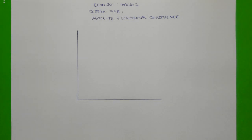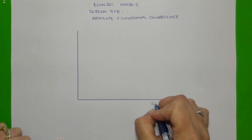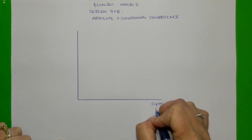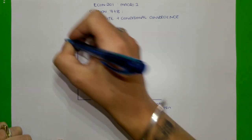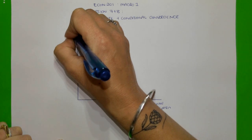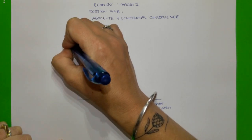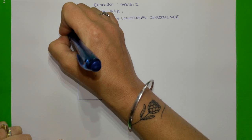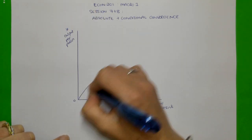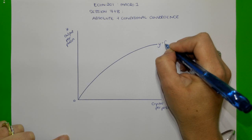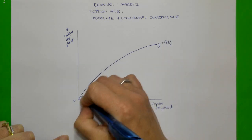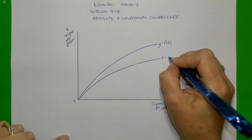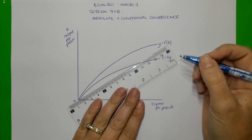We're going to use neoclassical growth theory to understand absolute and conditional convergence. I'm going to label my axes: capital per person (little k) on the horizontal axis, output per person (little y) on the vertical axis. I'll start by drawing a production function, a savings function, and the investment requirement line.